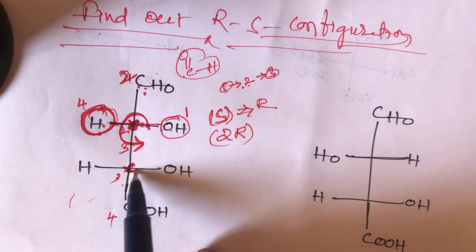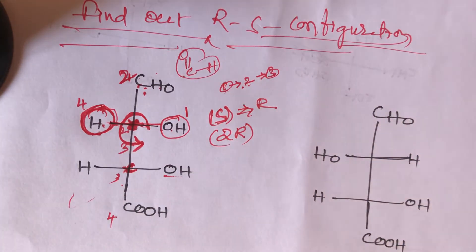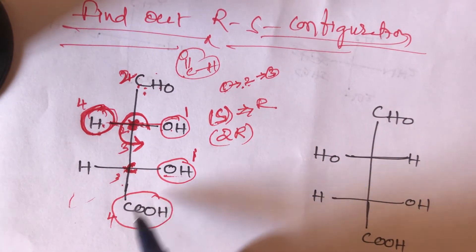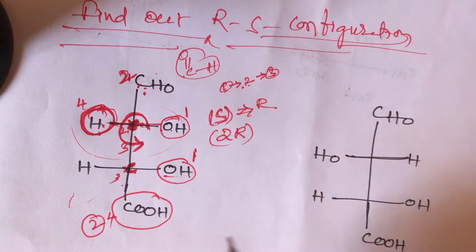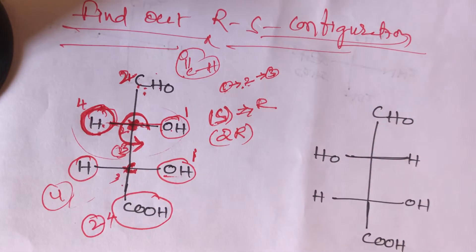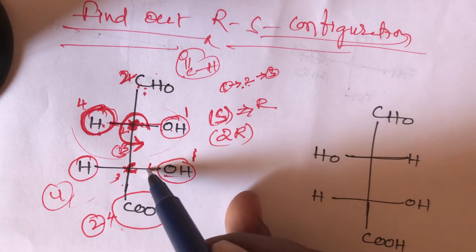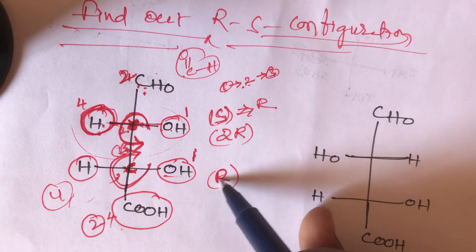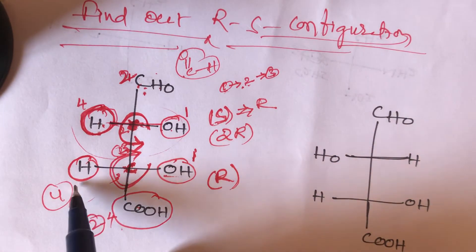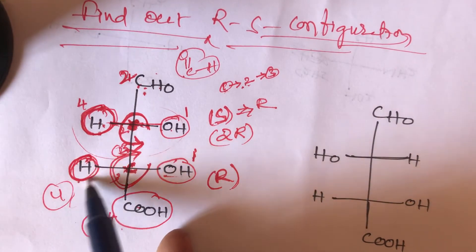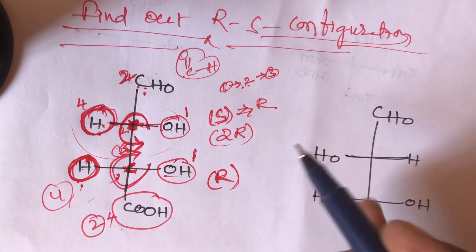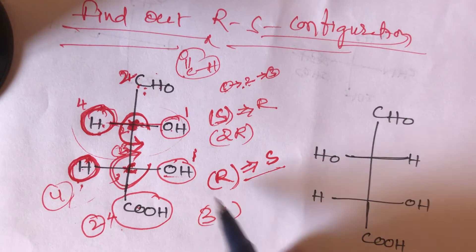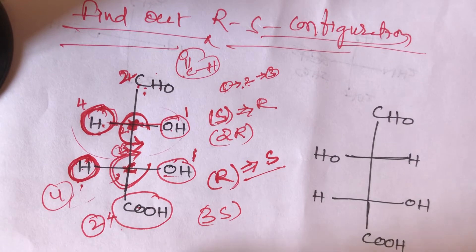For the third carbon, it is directly attached to an OH group, a hydrogen, a COOH group, and the complete bulky group above. First priority goes to OH, second priority goes to COOH, third priority goes to the complete bulky group, and fourth priority goes to hydrogen. The direction 1→2→3 is clockwise, meaning R configuration. But again, the least priority group hydrogen is on the horizontal line, so R configuration becomes S. This carbon is 3S configuration.